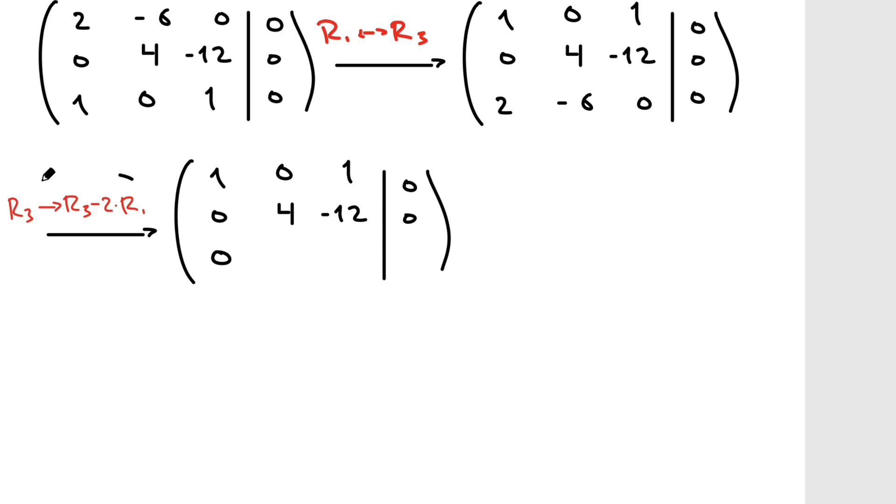So this will be zero. That's how we chose our elementary row operation. And now over here, we'll have negative six minus two times zero, which is just negative six. So that hasn't changed. And over here, we're going to have zero minus two times R1. R1 is one. So we'll have negative two. And over here, we'll have zero.